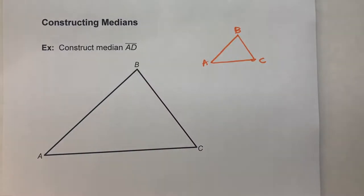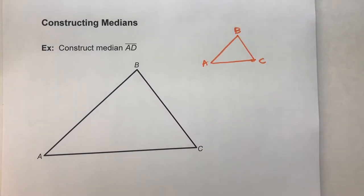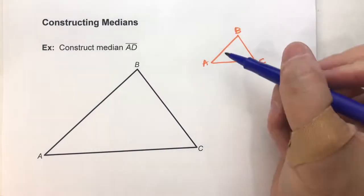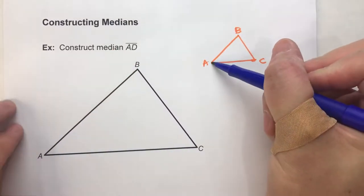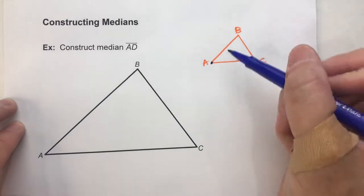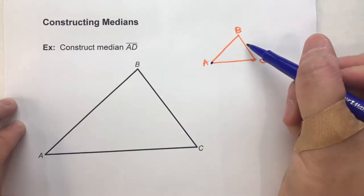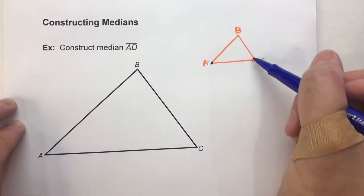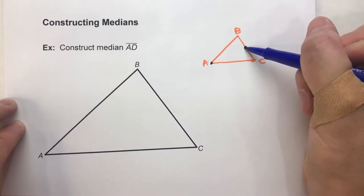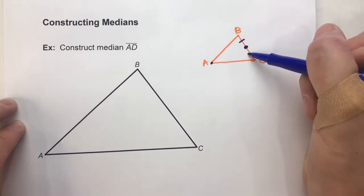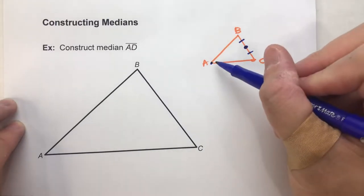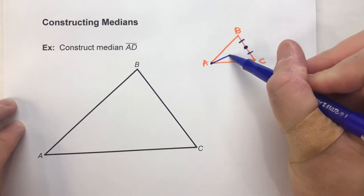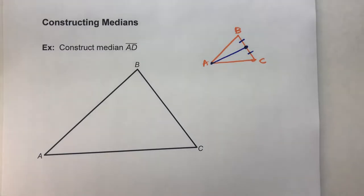Now, you have to remember what a median is. The median of a triangle goes from one vertex, in this case we want it to go off of A, and we want it to go to the midpoint of its opposite side. So the opposite side is BC, this side over here. So what we're going to have to do is find the midpoint of this side, and then we'll draw a line and connect the vertex to that midpoint. And that's median.